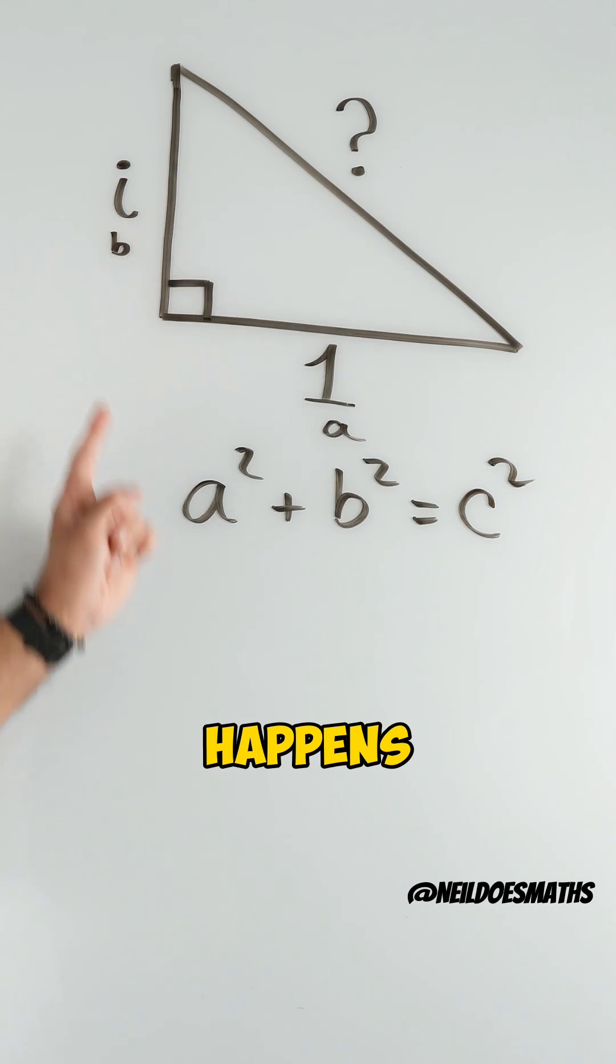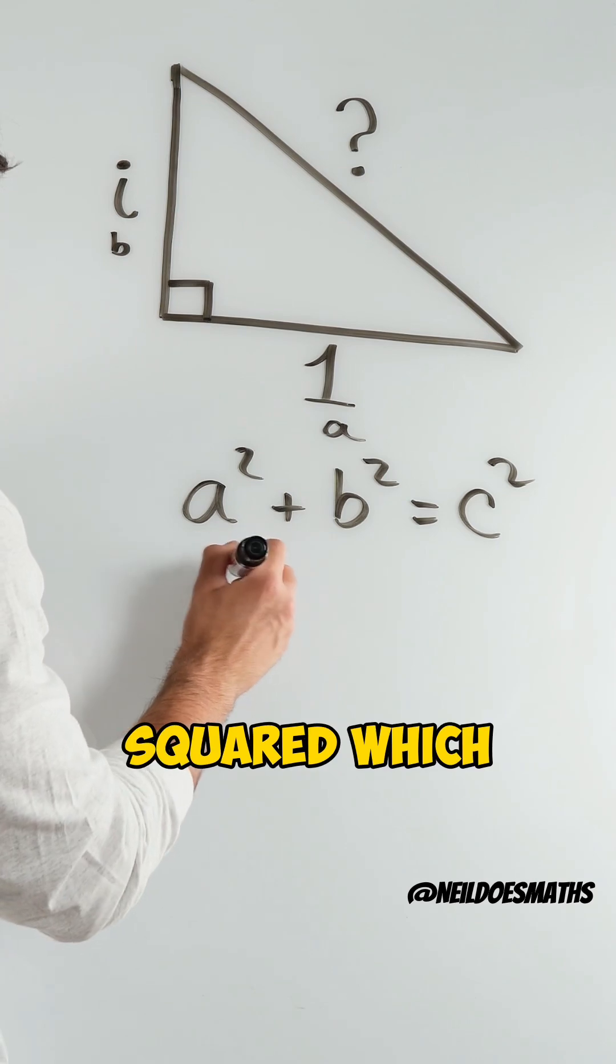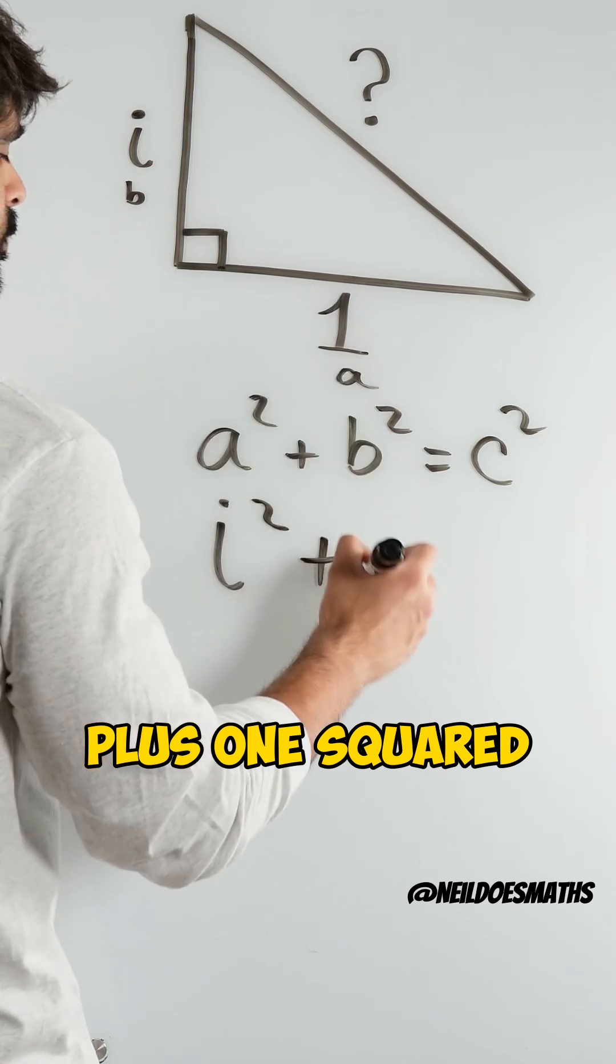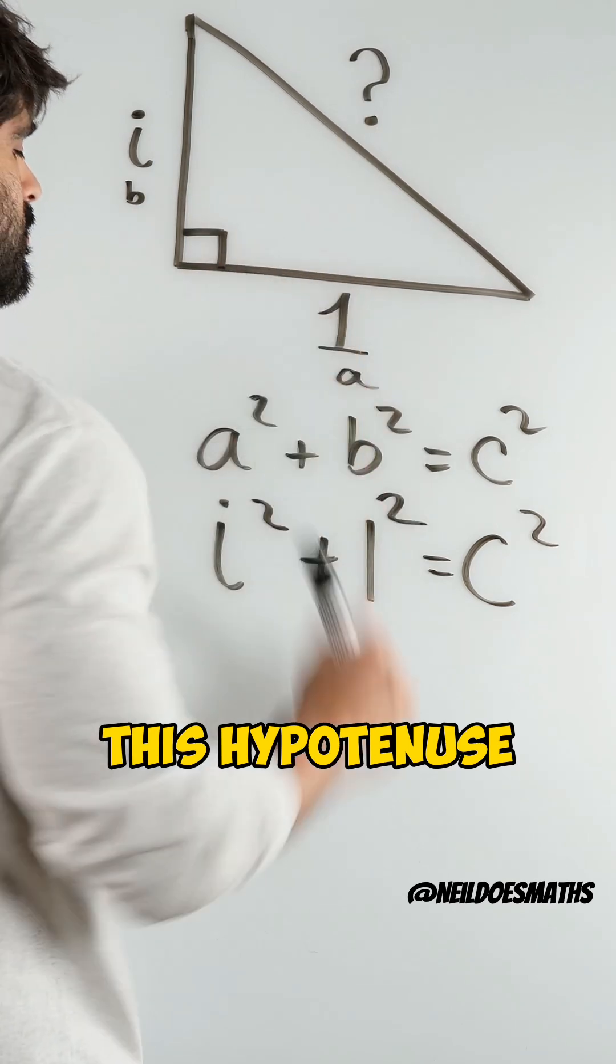However, what happens when we input imaginary numbers? I have i squared, which I've labeled as b but it doesn't really matter, plus one squared equals c squared, this hypotenuse squared.